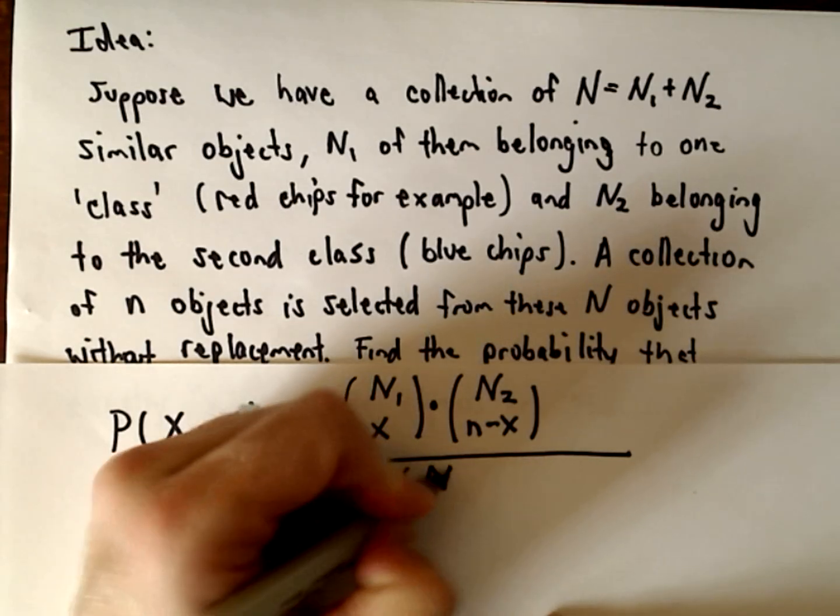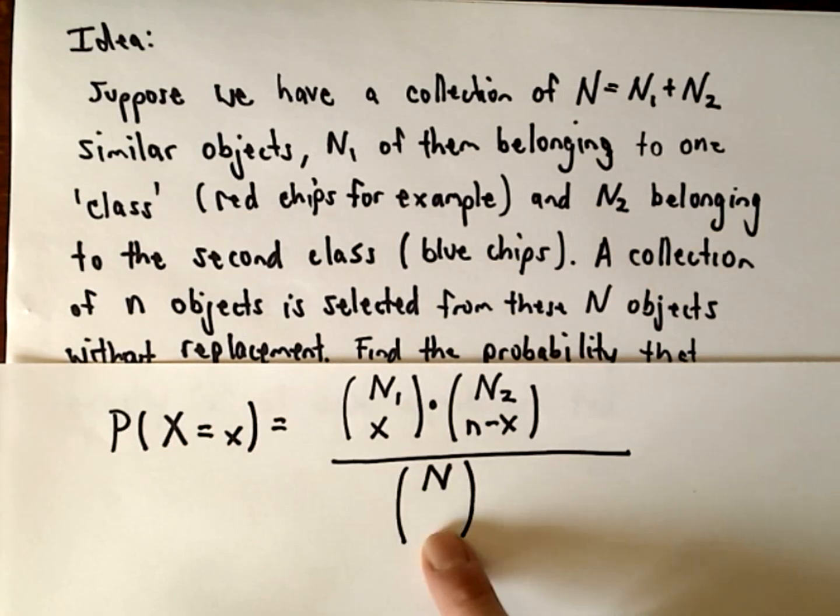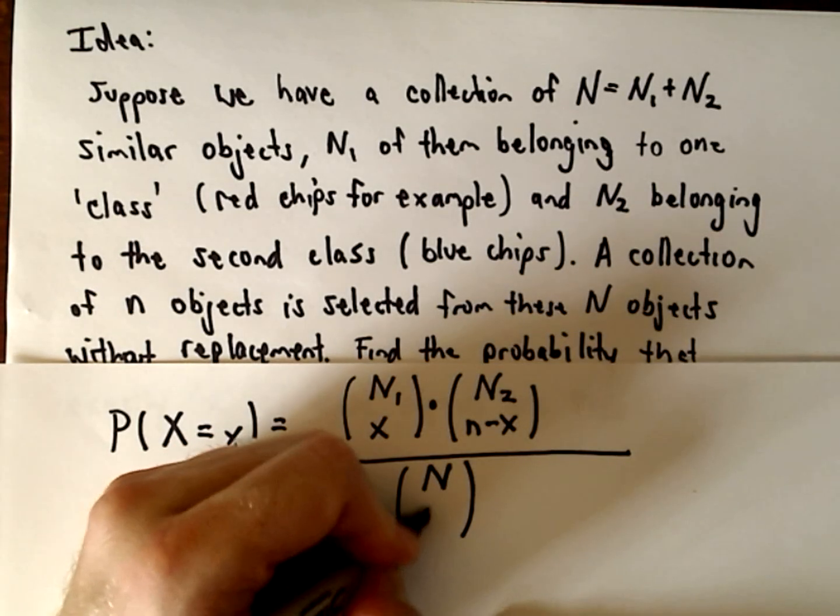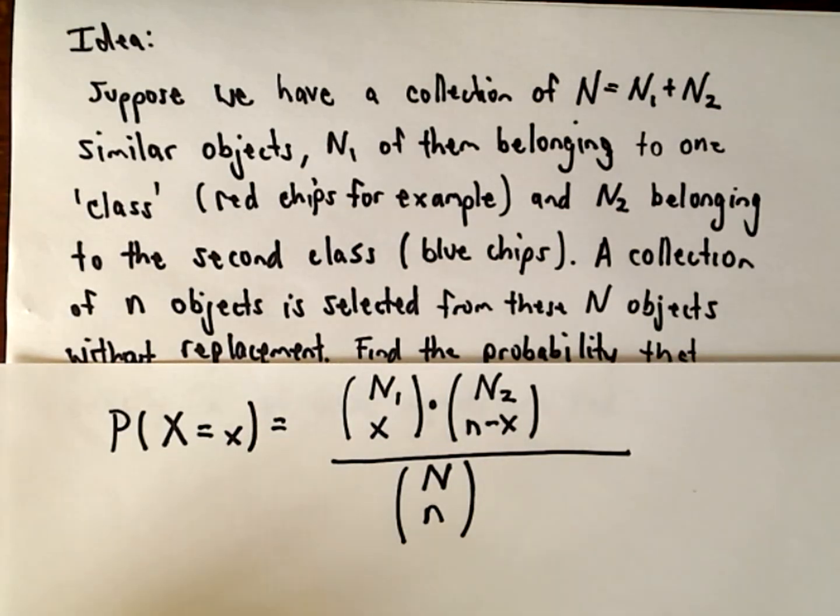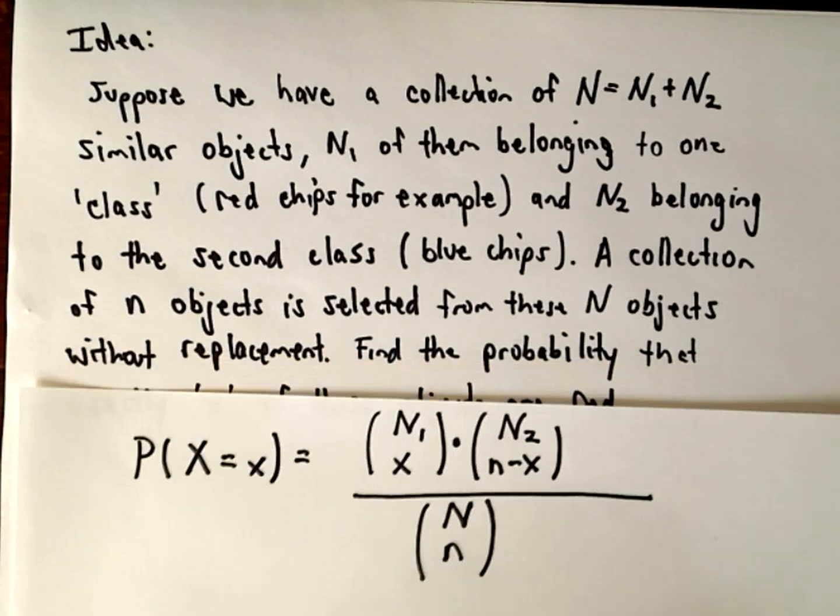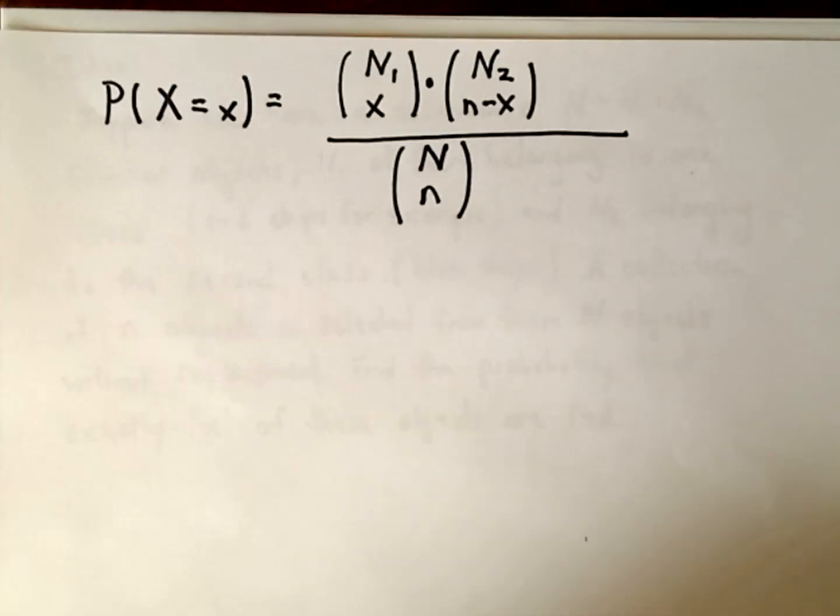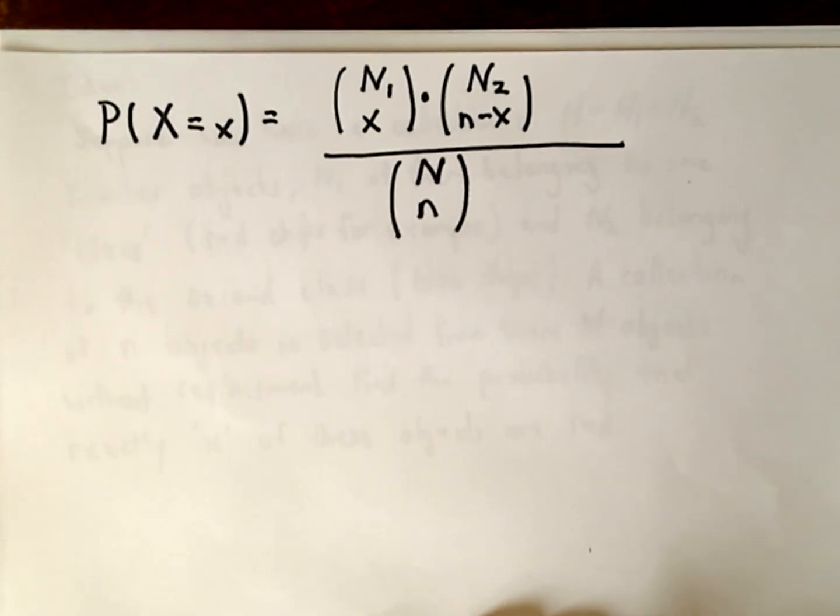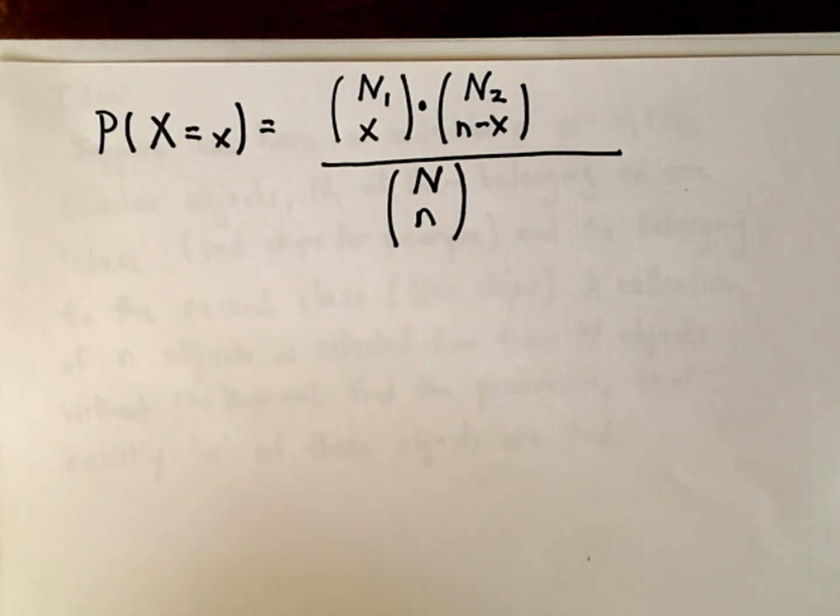But in total, we've got capital N objects total to pick from and we're choosing little n of those. So that's where this formula is coming from. That's all there is to it if you're familiar with basic probability and combinations.